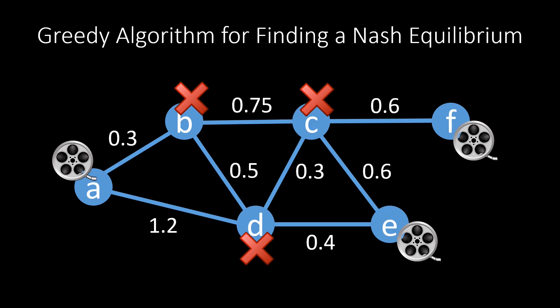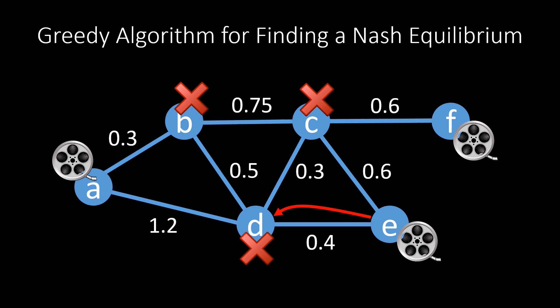This is a Nash equilibrium because no node wants to change its strategy. The nodes which fetch the movie from somebody else don't want to change their strategy because they can fetch the movie from somebody close by — the closest cache might have changed in the run of the algorithm. Node d, for instance, chose to fetch because node f was closer than distance 1, but later node e was even closer. On the other hand, all the caching nodes do not want to change their strategy either. When we chose them, we made sure that they have a distance which is larger than 1 between any two of them. So no node changes its strategy, and we have a Nash equilibrium.